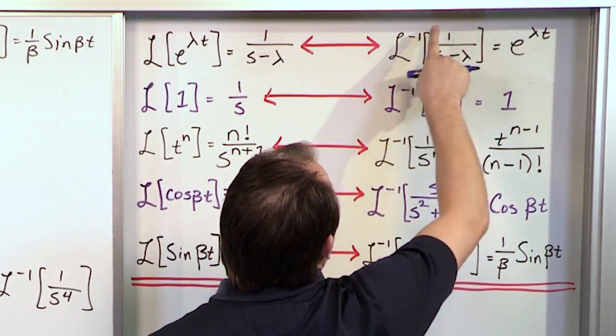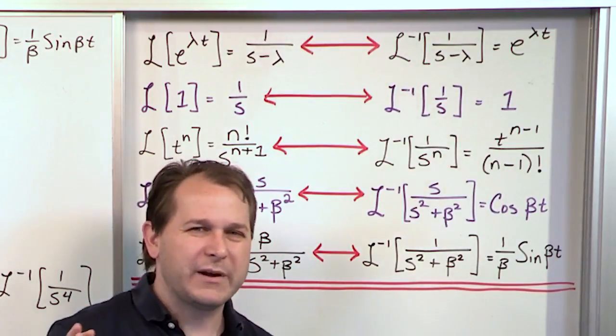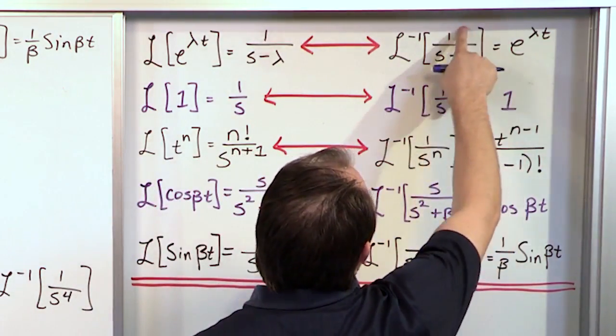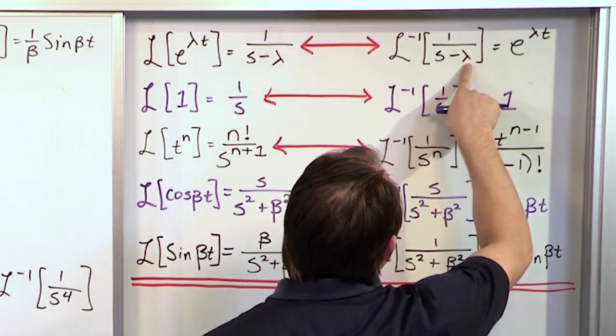notice that the way the actual rule is written, this is how you can get tripped up on simple little things. The actual table is written as 1 over s minus lambda. And whatever's here gets thrown up in here.